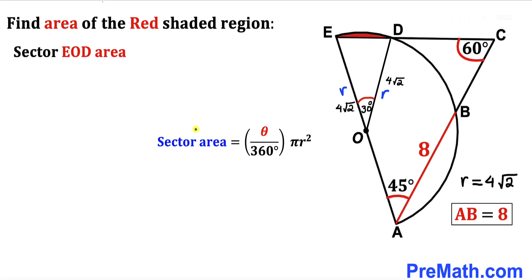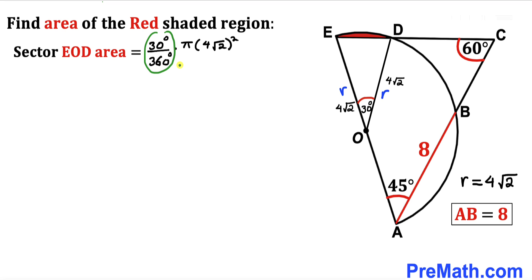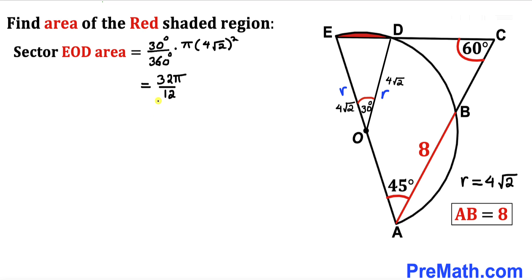To calculate the area of sector EOD, we use the formula: area = (θ/360°) × πr². Here θ is 30 degrees and r is 4√2. So the sector area equals (30/360) × π × (4√2)², which gives (1/12) × π × 32 = 32π/12 = 8π/3.